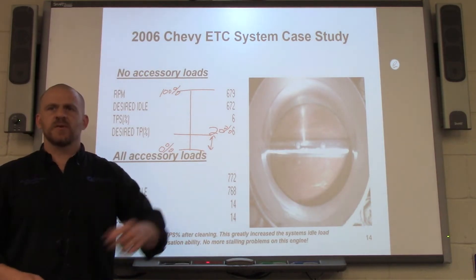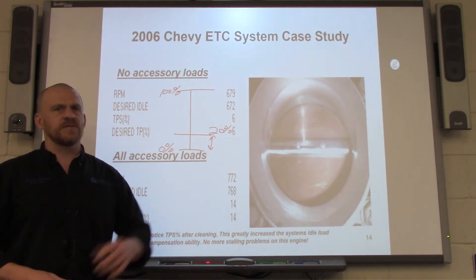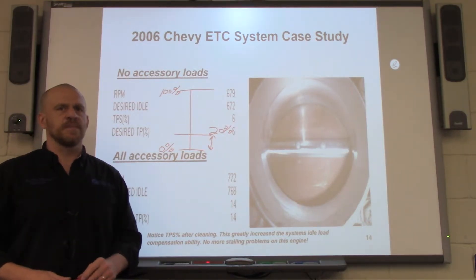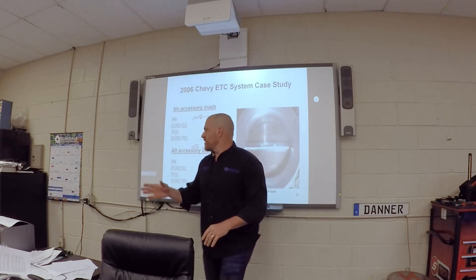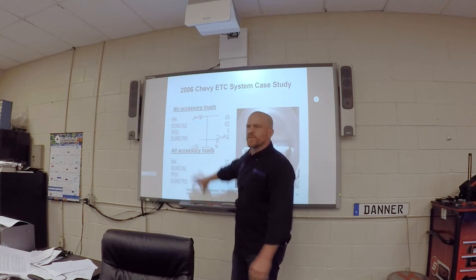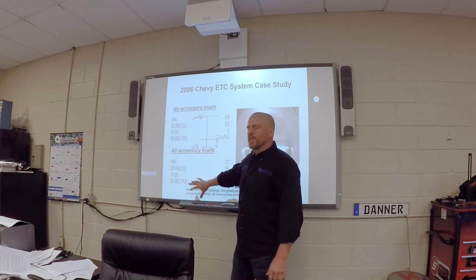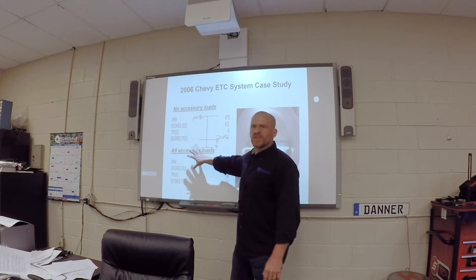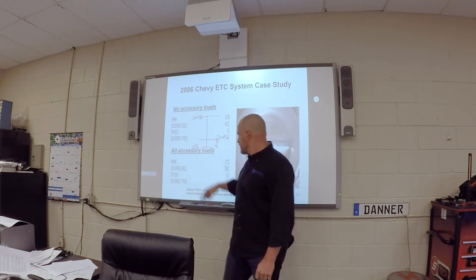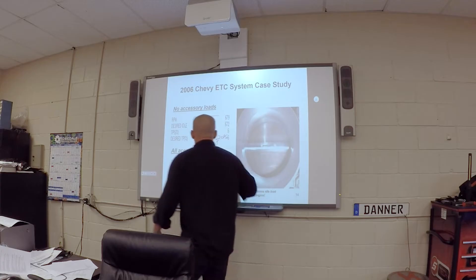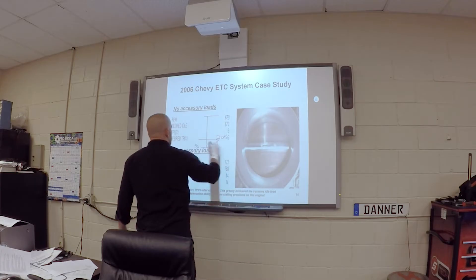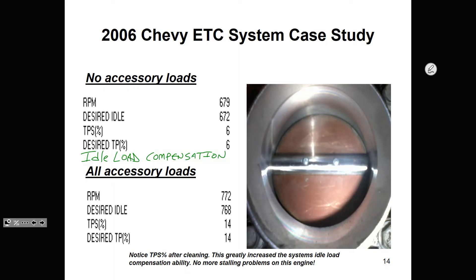Same thing we saw with this Toyota — they've been doing this for a long time. They've changed some of these parameters, and now on newer systems it'll actually give us an idle load compensation percentage directly in the scan data.